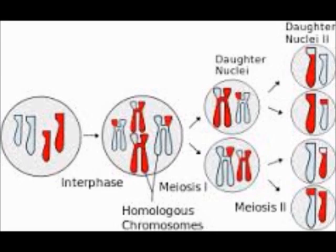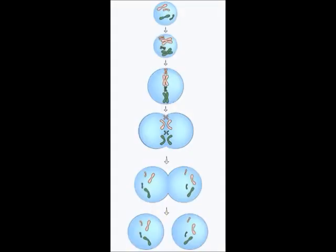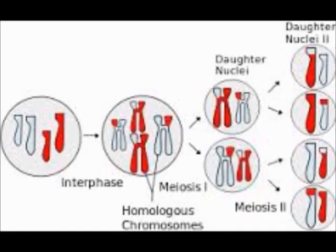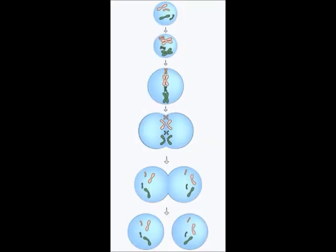Meiosis — most of it's out of your hands. The crossing over of parts of chromatids creates more genetic variation. In the second division, chromatids move apart and four cells have been formed.